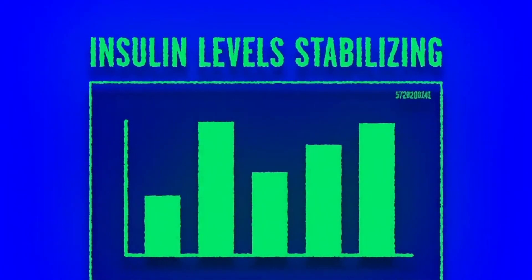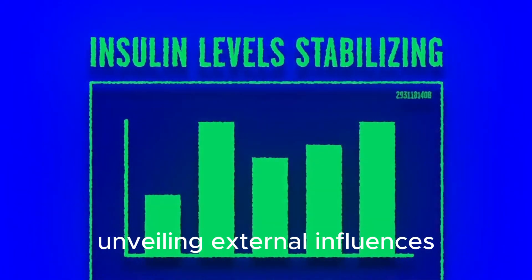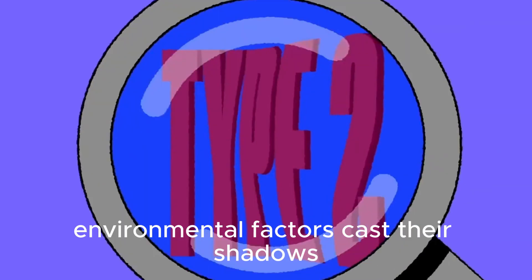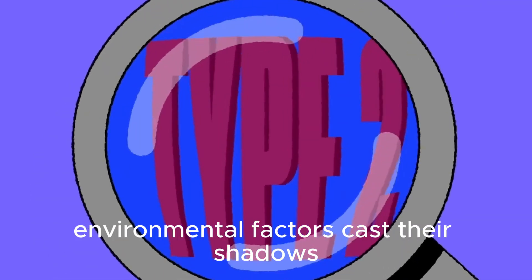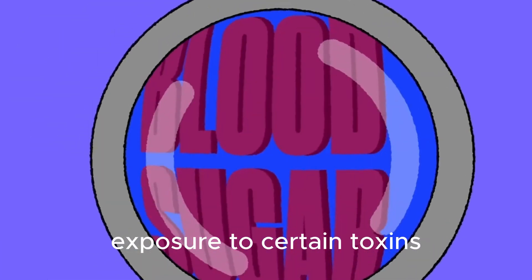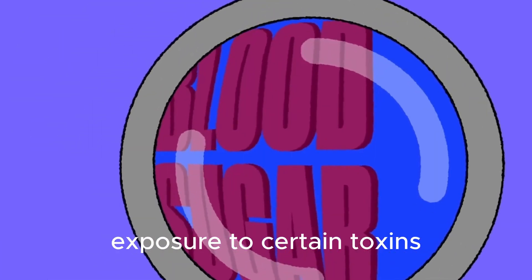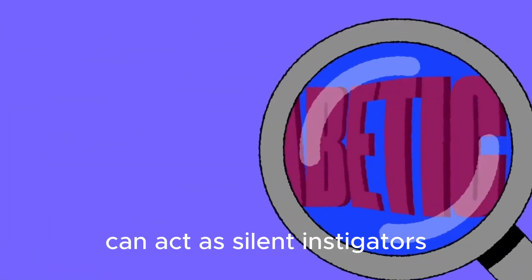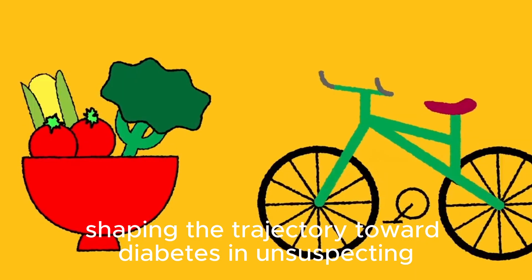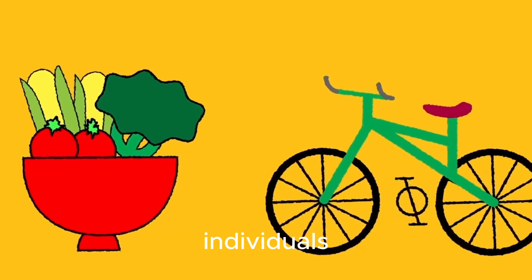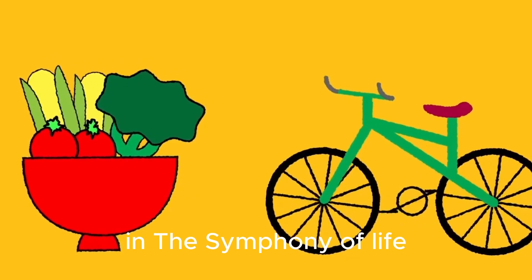Environmental exposures — unveiling external influences. Beyond the confines of our genetic code and lifestyle choices, environmental factors cast their shadows on the diabetes landscape. Exposure to certain toxins, pollutants, and even prenatal influences can act as silent instigators, shaping the trajectory toward diabetes in unsuspecting individuals.